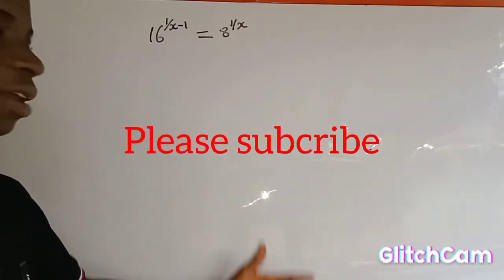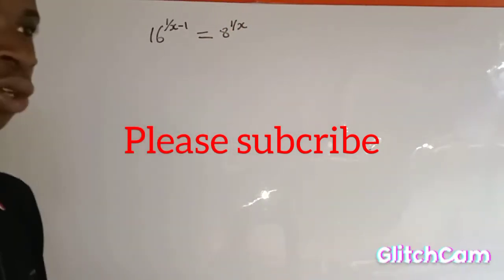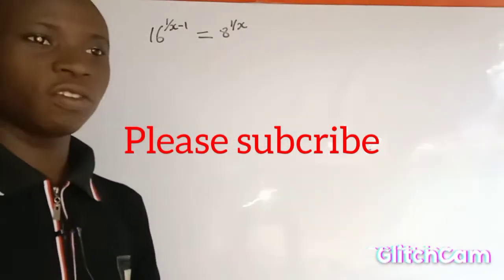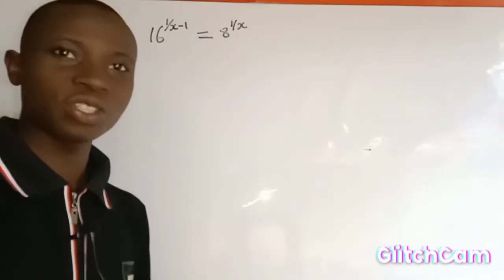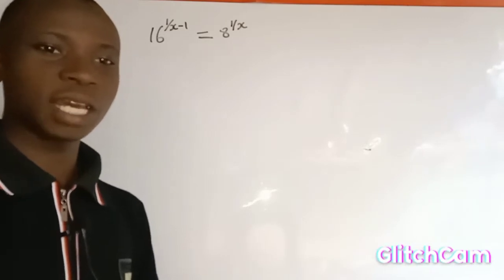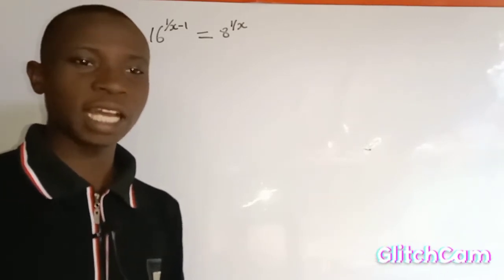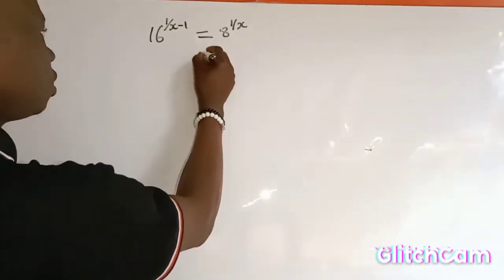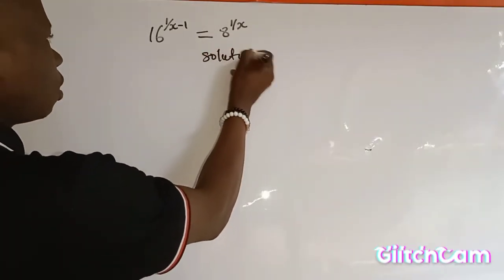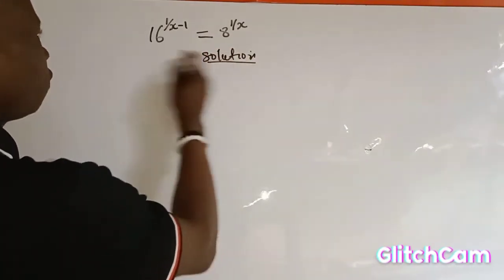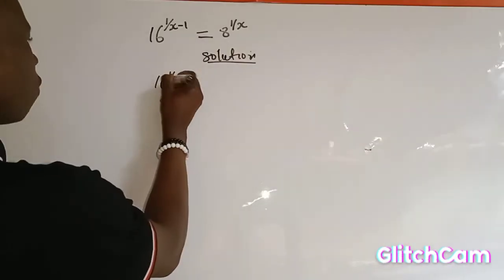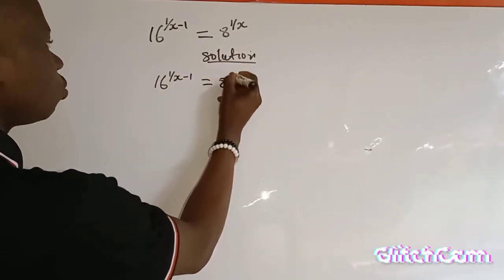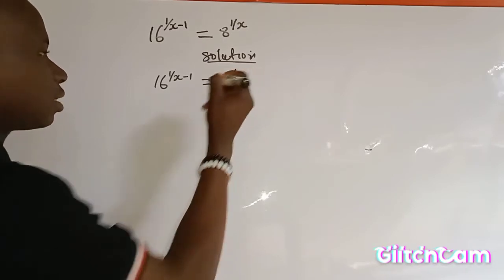We're asked to find the value of s in this equation. This is an indicial equation. To find a solution to this kind of equation, the equation is 16 to the power of 1 over s minus 1, which is equal to 8 to the power of 1 over s.